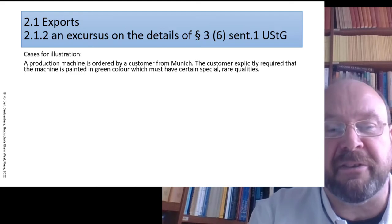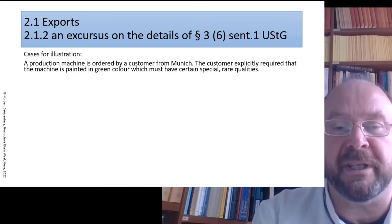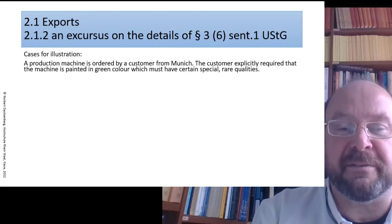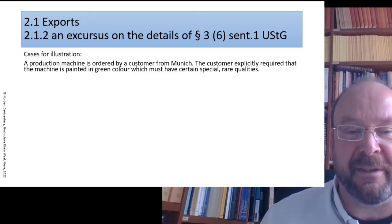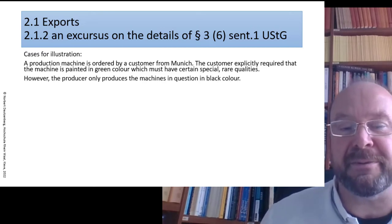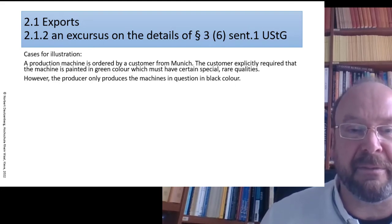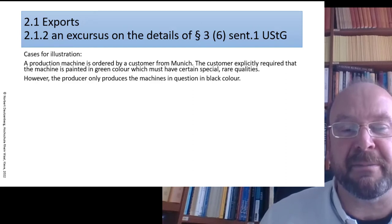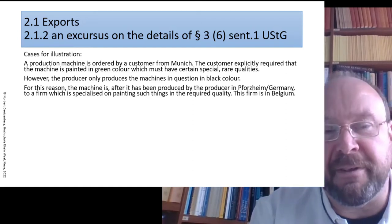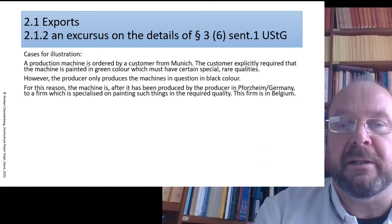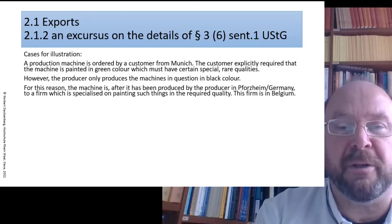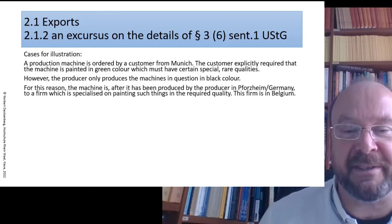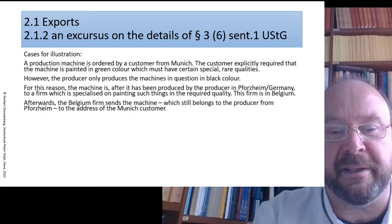Another case: a production machine is ordered by a customer from Munich. That customer explicitly required that the machine be painted in a green color fulfilling certain special rare qualities. The producer is not able to do so — he only produces machines in black, which does not fulfill the customer's requirements. So after the machine is produced in Potsdam, Germany, it has to be sent to a firm in Belgium specialized in the required painting.